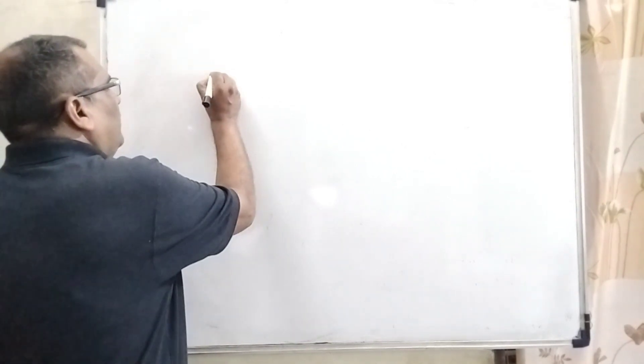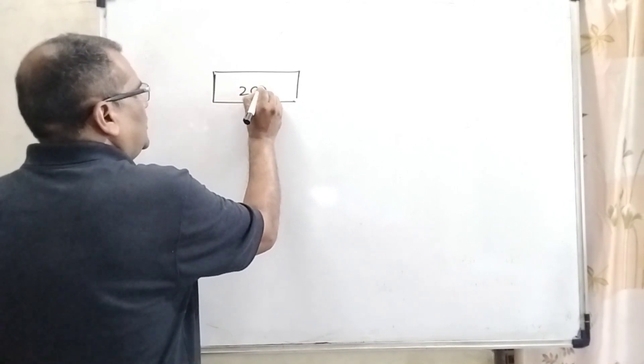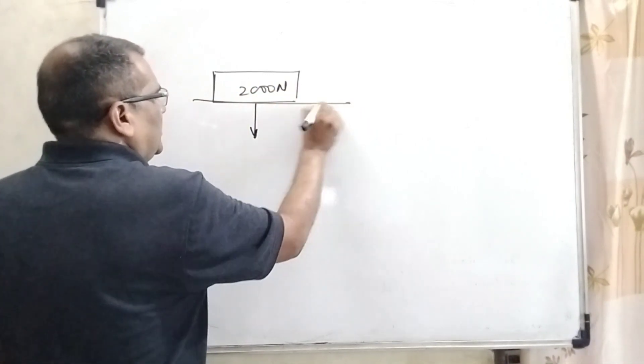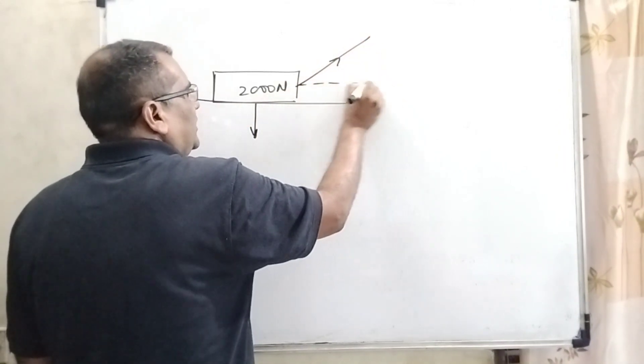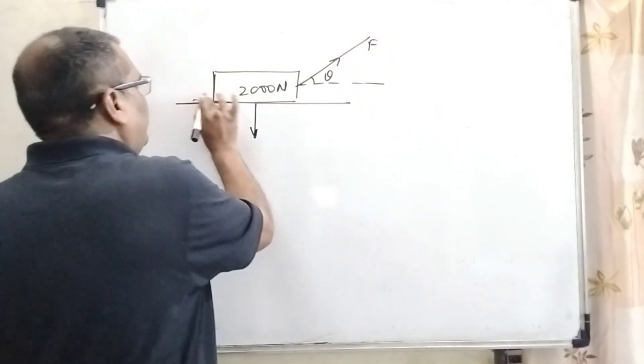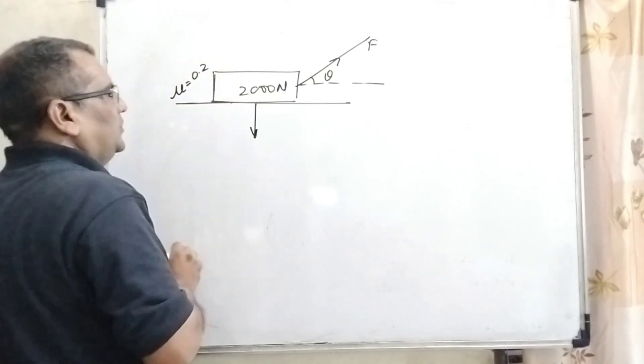What says the question? Here we have given a box which is 2000 Newton weighing. Its direction is downward direction. Applied force to drag it, making angle theta with the horizontal. And friction between the surface and the box, that is mu 0.2.